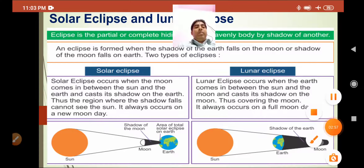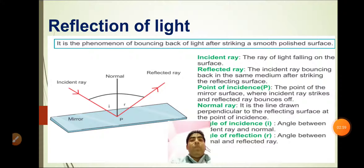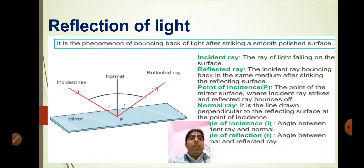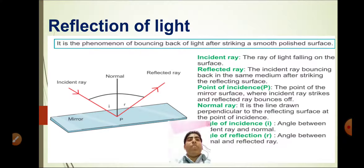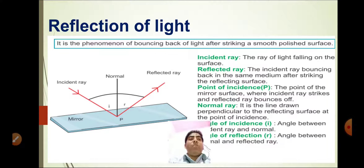Now we are going to read about reflection. When you look into a plane mirror in your bathroom or bedroom, you can see your image in it. This is possible because of the property of reflection. Reflection of light is the process of bouncing back of light rays that fall on the surface of an object. Reflection of light gives rise to the formation of an image.